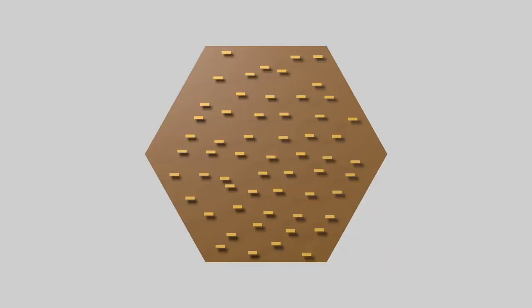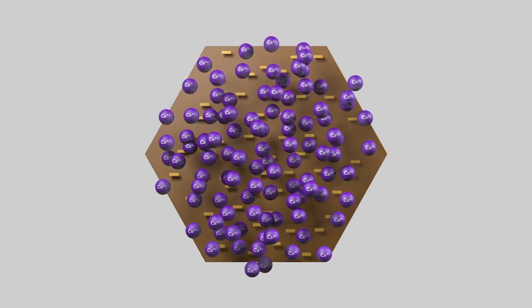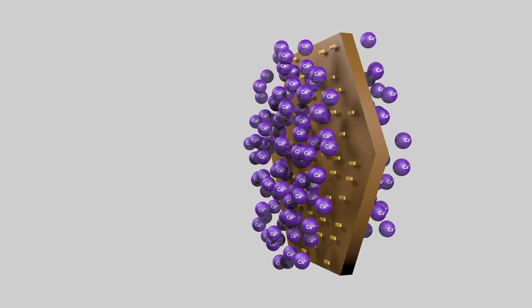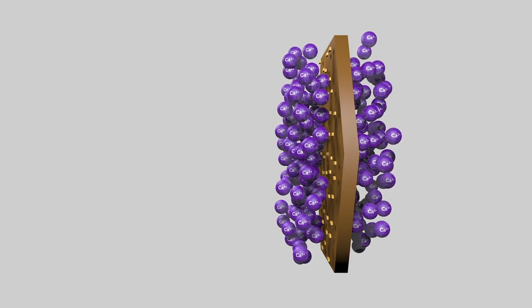When divalent calcium ions come into contact with clay particles, they adsorb much more strongly to the negatively charged surfaces of the clay platelets, and the cloud of cations making up the diffuse double layer is far thinner.